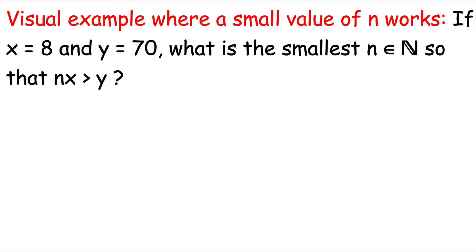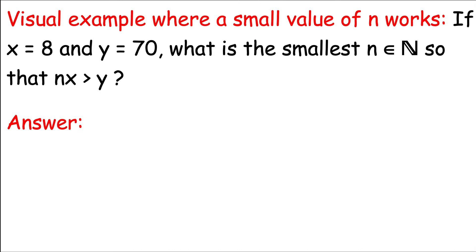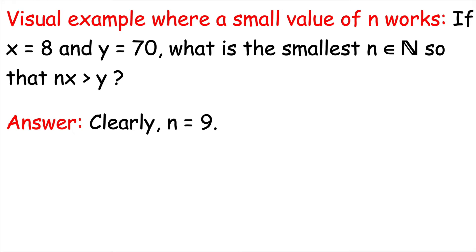Now let's consider a simpler example that we can visualize on Mathematica. If x equals 8 and y equals 70, what is the smallest natural number so that n times x is greater than y? Clearly the answer is n equals 9. It would take 9 little line segments of length 8 put together to get a line segment just barely greater than length 70 — of course, it would have length 9 times 8 equals 72.